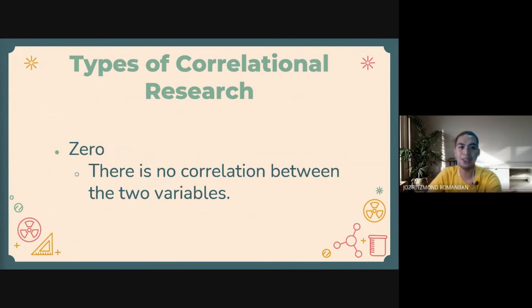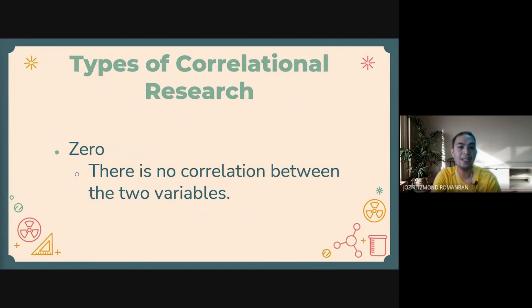Lastly, we have zero correlation, wherein there is simply no correlation between the two variables. For example, being a millionaire and happiness is not correlated. An increase in money does not lead to happiness and vice versa.